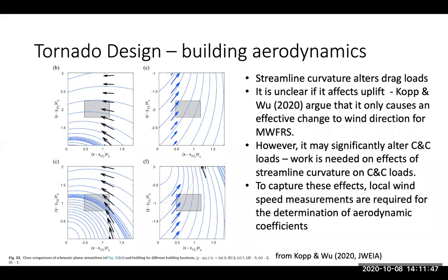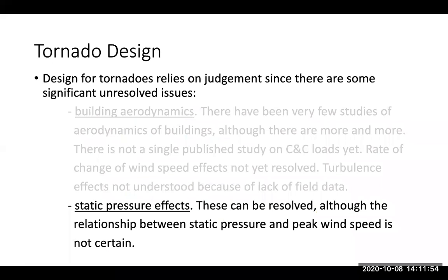So this area is being looked at. There are still some significant open questions, but progress is being made. Tornadoes also have a very strong static pressure drop, and I think there are still open questions about that, particularly with how tornado vortex generators generate the static pressure and the peak wind speed. And again, we're lacking full-scale field data.